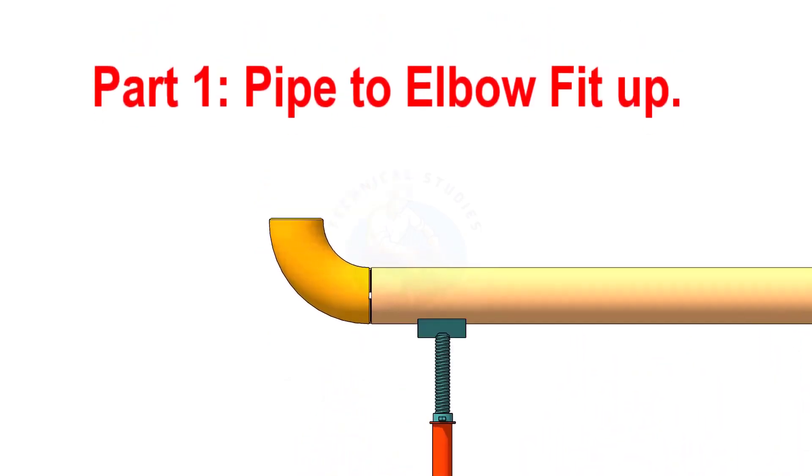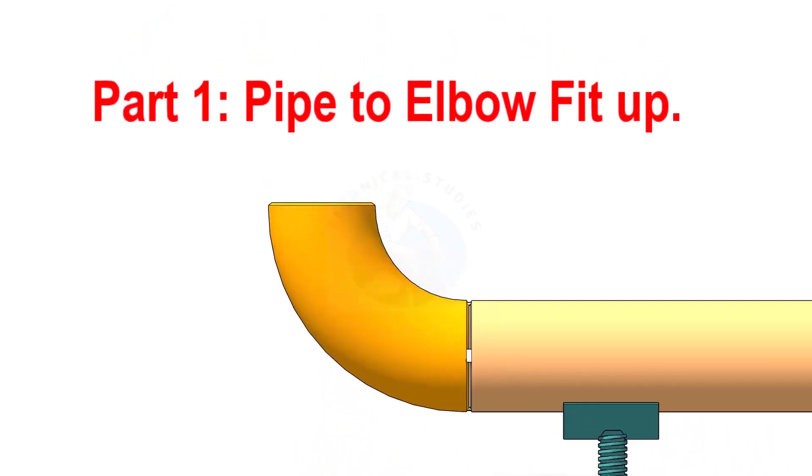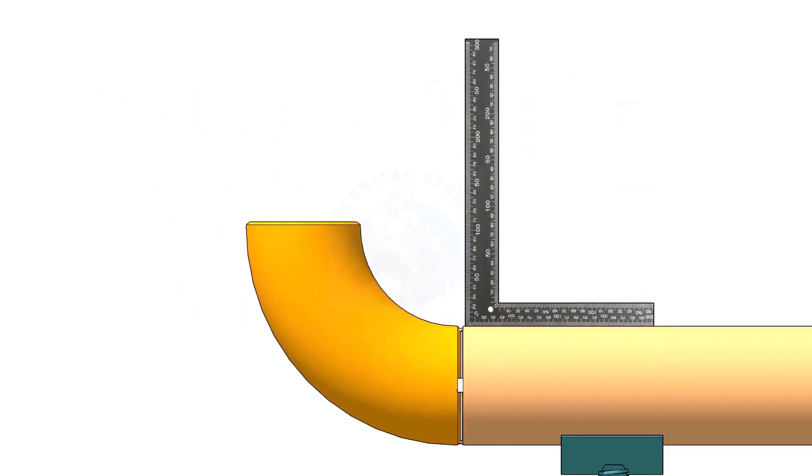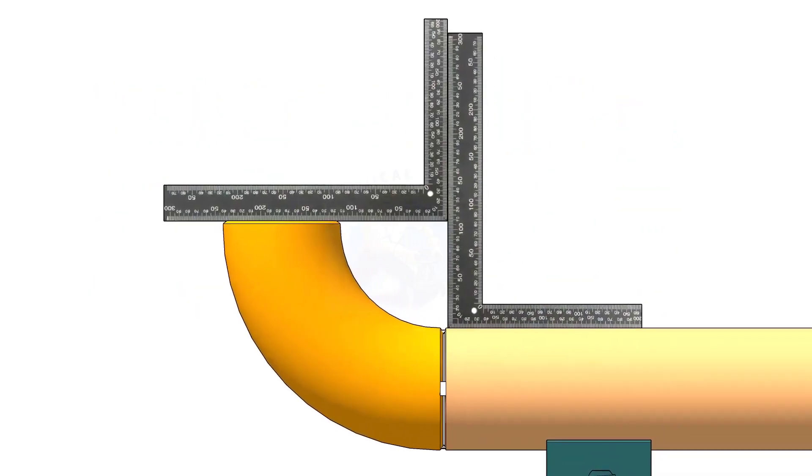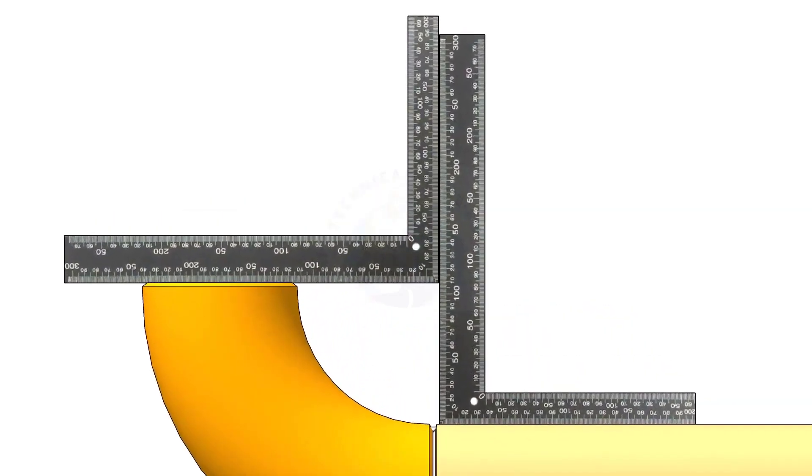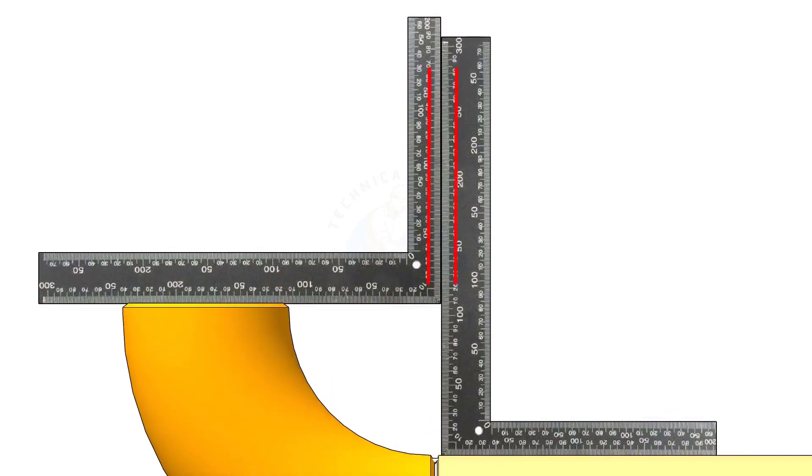There are different methods to check the fit up of an elbow to a pipe. One method is, hold right angles on the pipe and on the elbow, and check the gap. If the right angles are parallel, the fit up is correct.